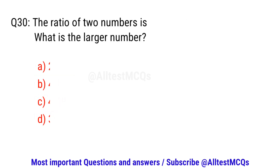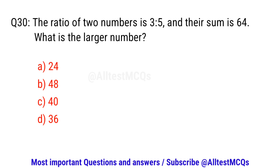Question number thirty. The ratio of two numbers is 3:5 and their sum is 64. What is the larger number? The right option is C. 40.